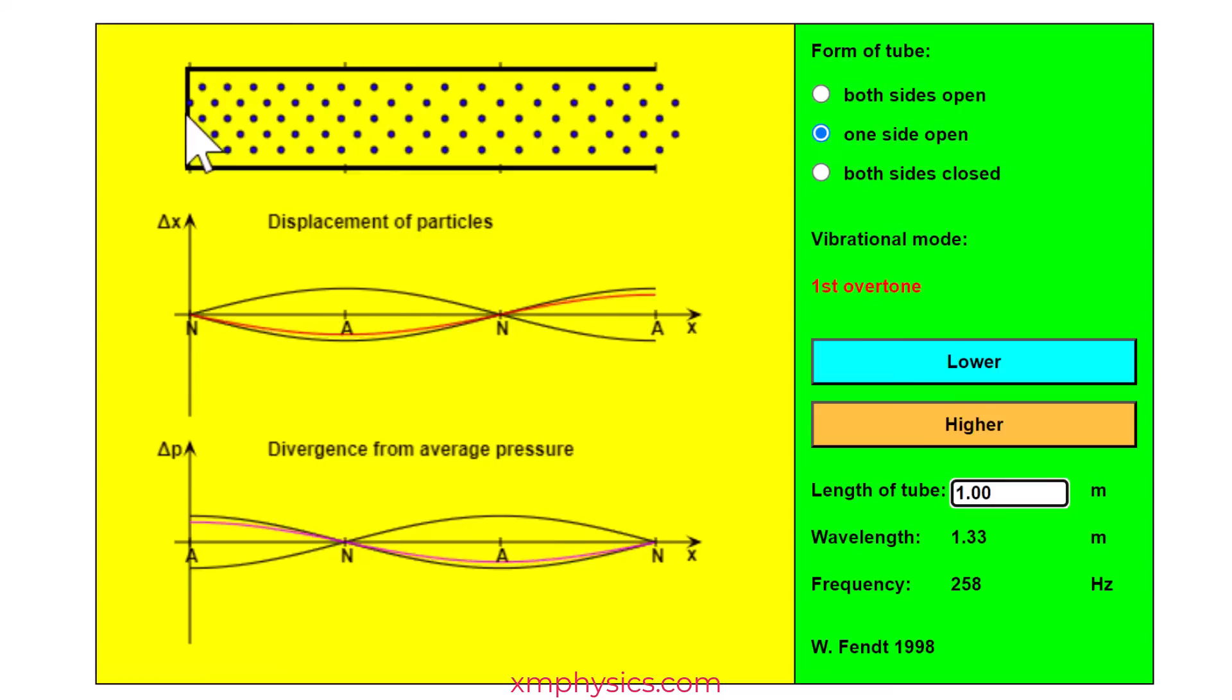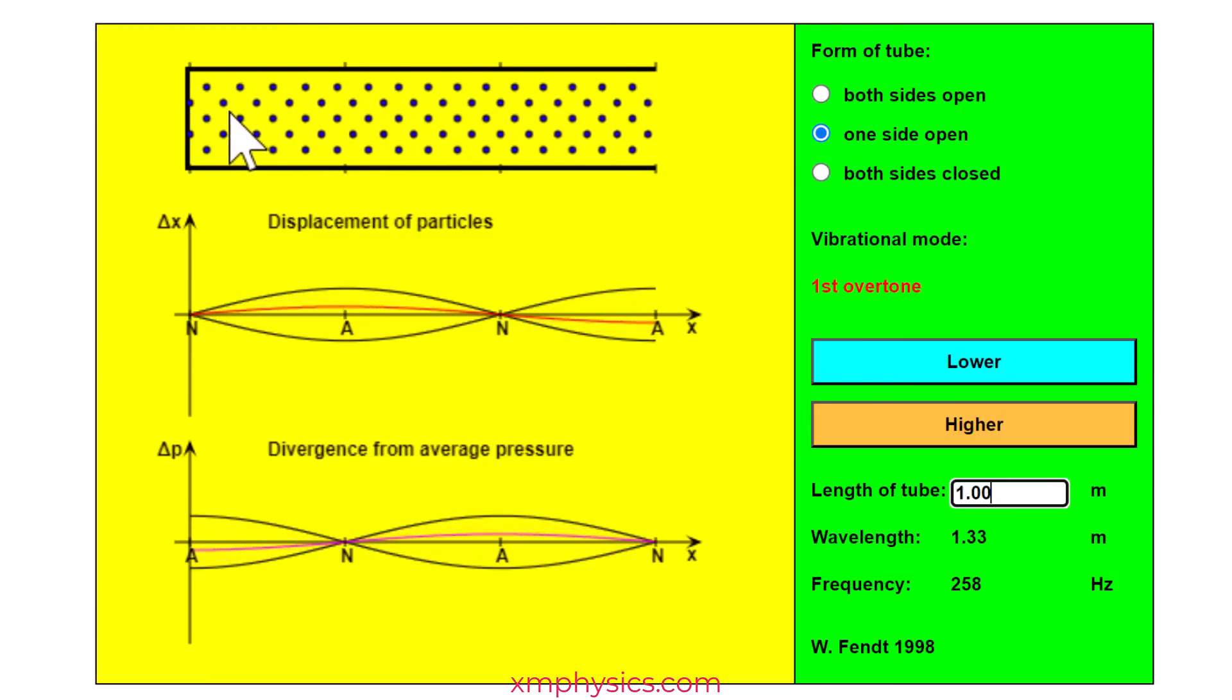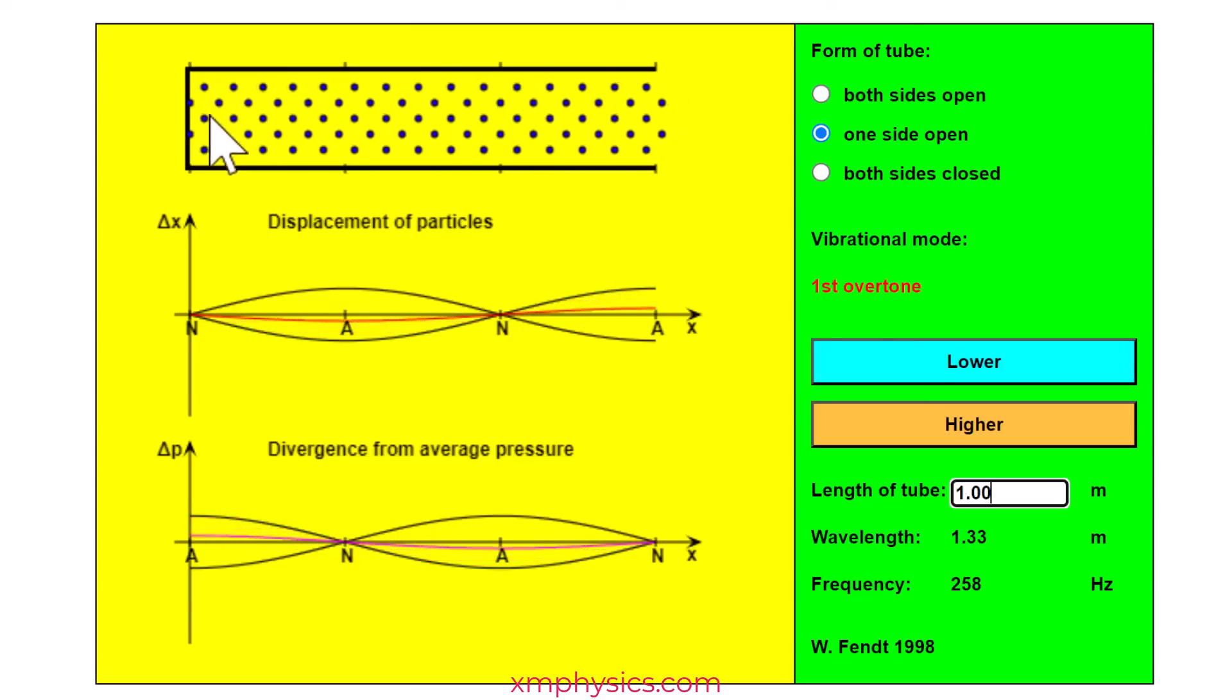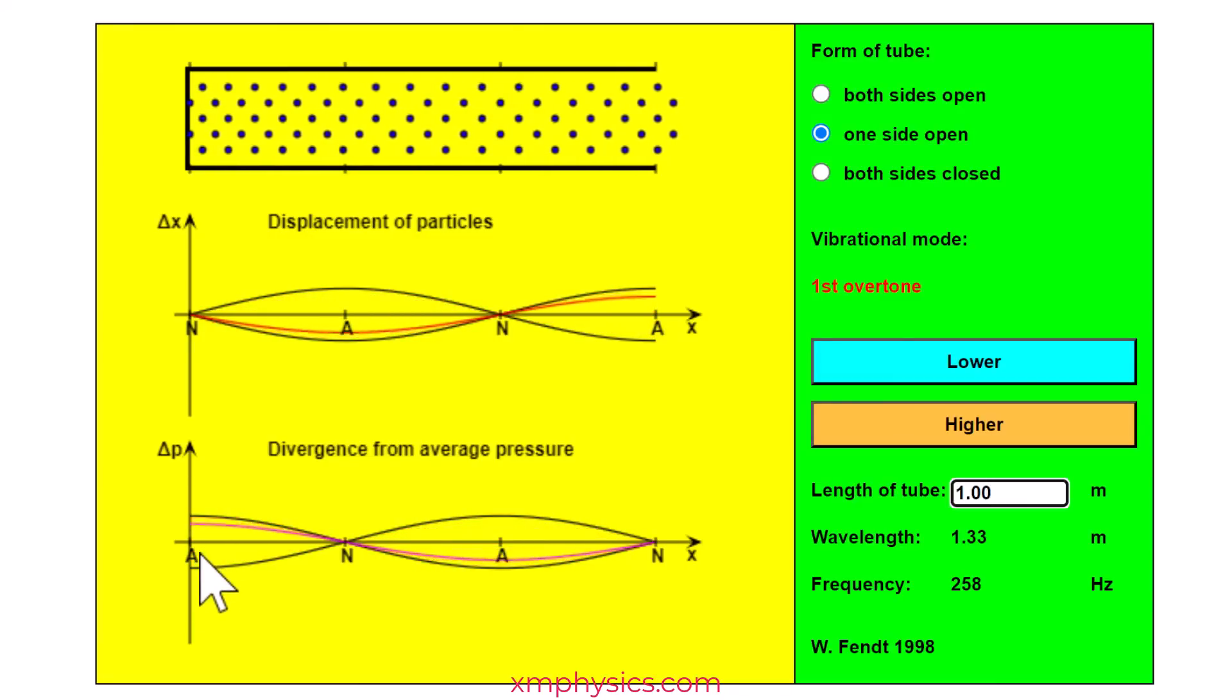As for the closed end, well because the air are not free to displace here so you can see the air coming in and moving away to cause a compression and rarefaction here. That's why at the closed end you have large variation in pressure and that's why it's a pressure anti-node.